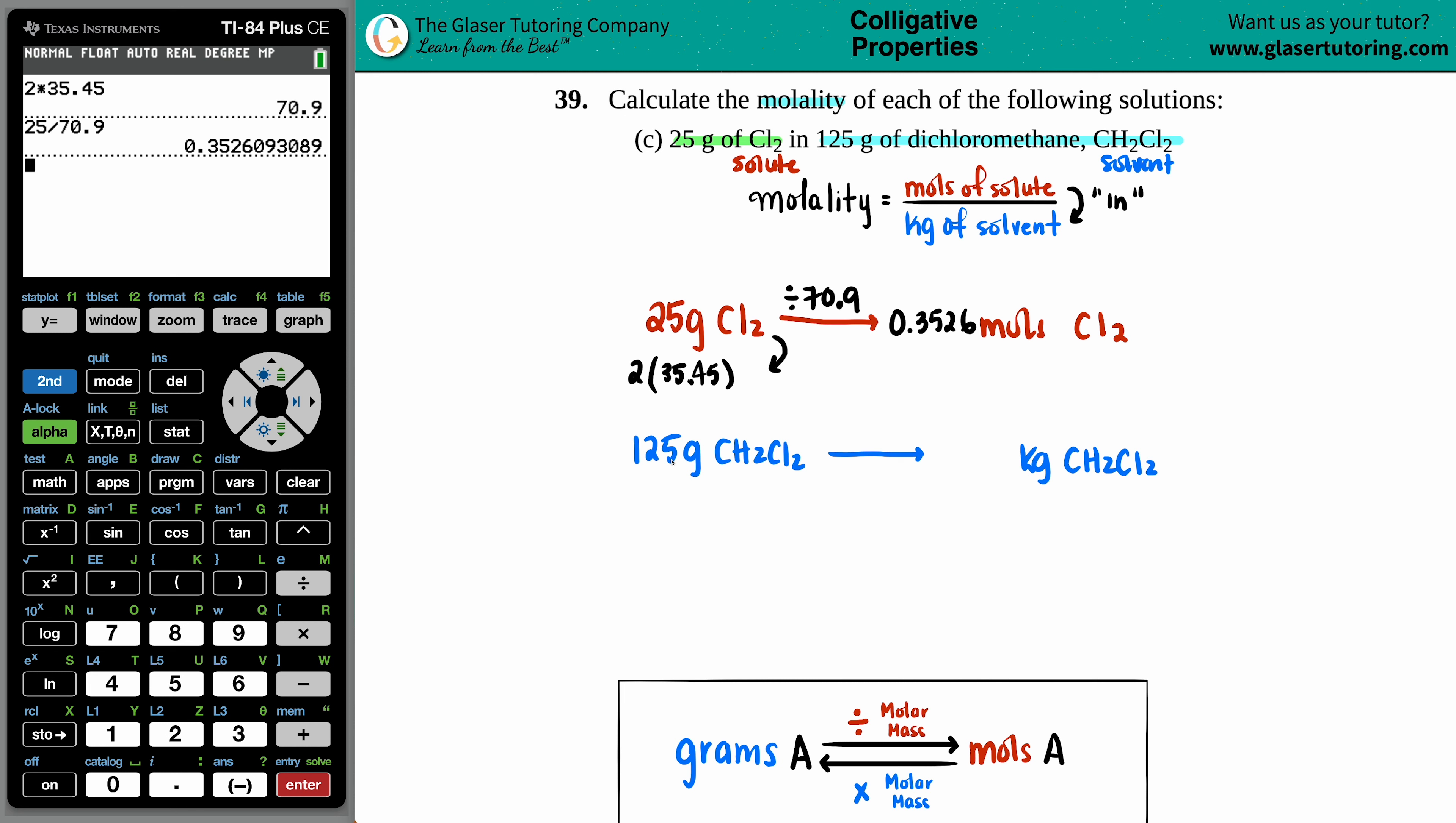How do we go from grams to kilograms? Once again, all the way back to the beginning of the class. We would just divide by 1,000. Or you can take your decimal and move it to the left three slots. So this would be 0.125 kilograms.